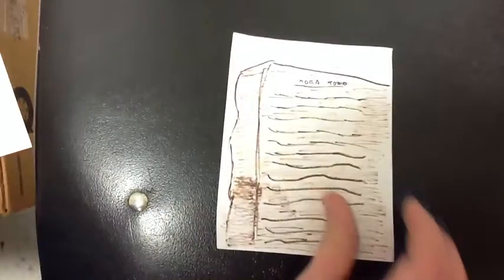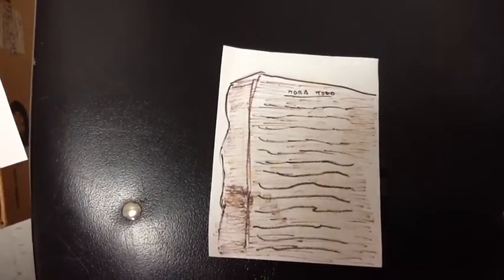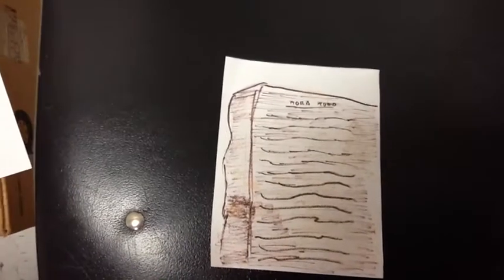Hammurabi's Code was written from 1792 to 1750 BCE. There were 282 of them.